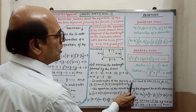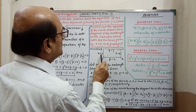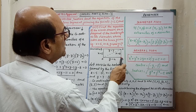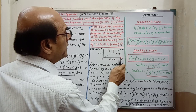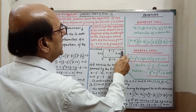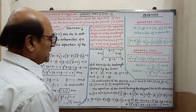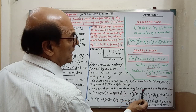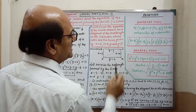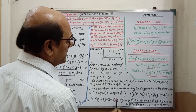Let ABCD be the rectangle formed by the lines. The coordinates of points A, B, C, D are: x equals 2 and y equals 4 intersect at A, so coordinates of A are (5, 4). The lines x equals 8 and y equals 4 intersect at B, so coordinates of B are (8, 4). Similarly, coordinates of C are (8, 7) and coordinates of D are (5, 7), respectively.